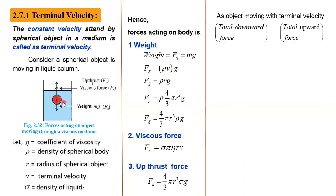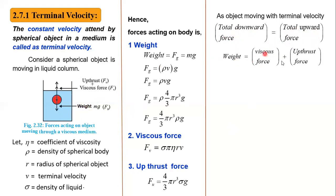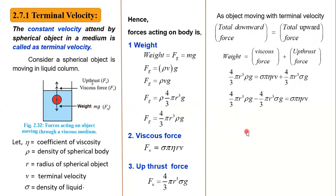When the spherical body moves with constant terminal velocity, it is in equilibrium — the upward and downward forces are balanced. So total downward force equals total upward force. Downward force is weight: 4/3 pi r cubed rho g. Upward forces are viscous force: 6 pi eta r v, and upthrush force: 4/3 pi r cubed sigma g.